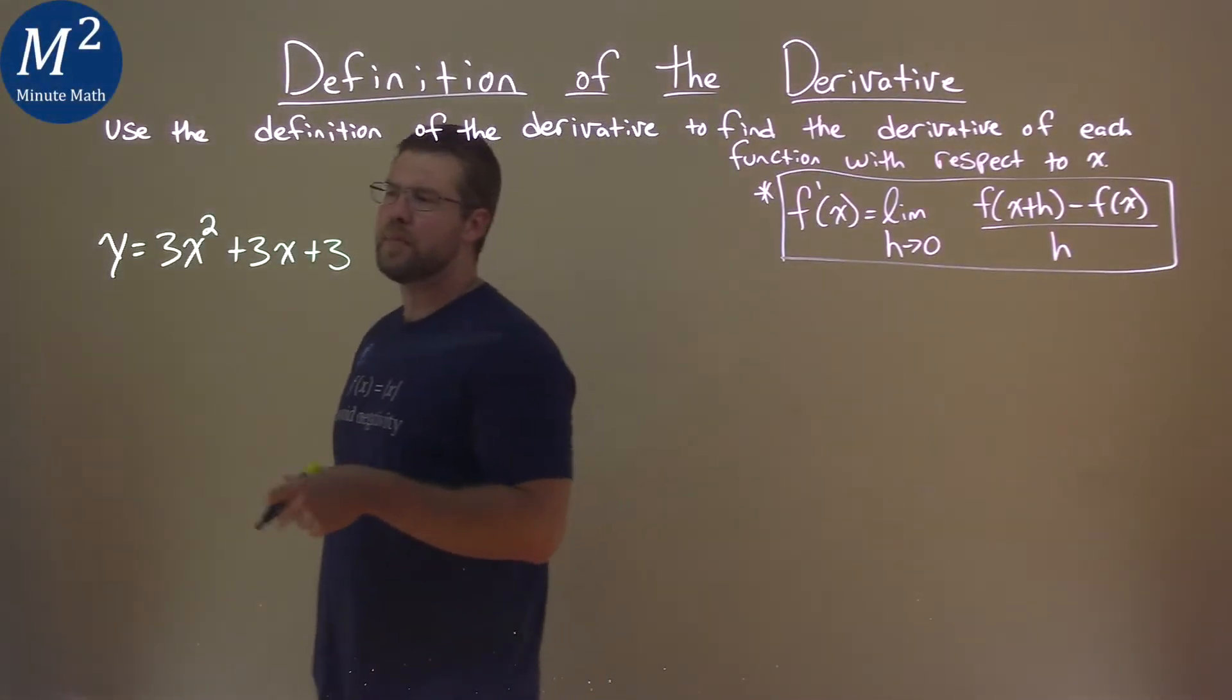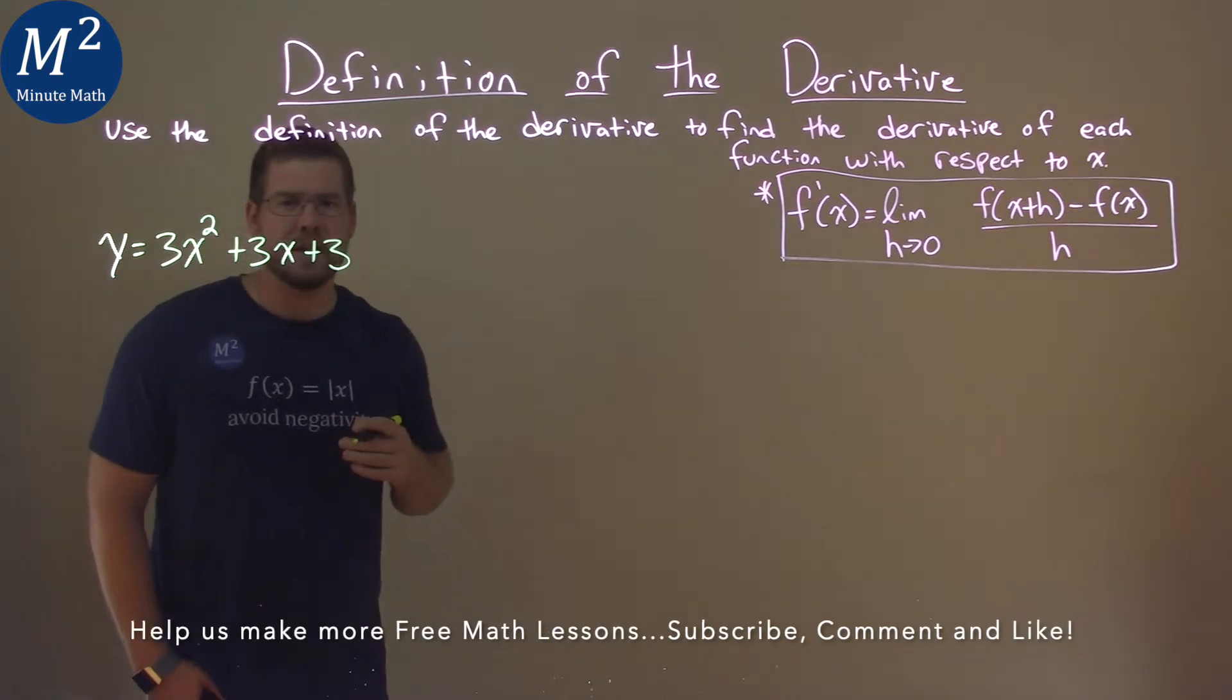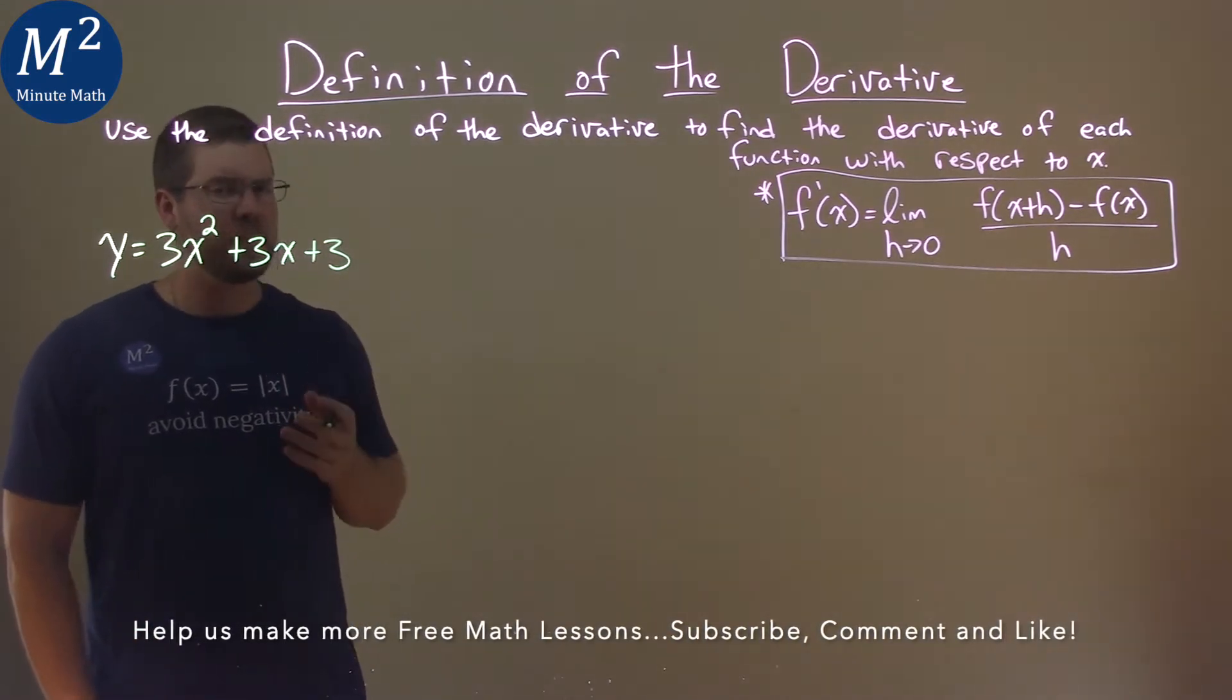We're given this problem right here: y equals 3x squared plus 3x plus 3, and we have to use the definition of the derivative to find the derivative.